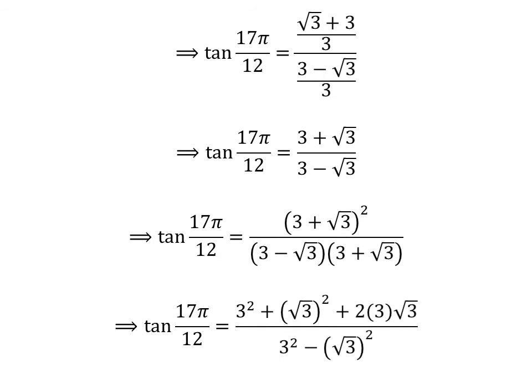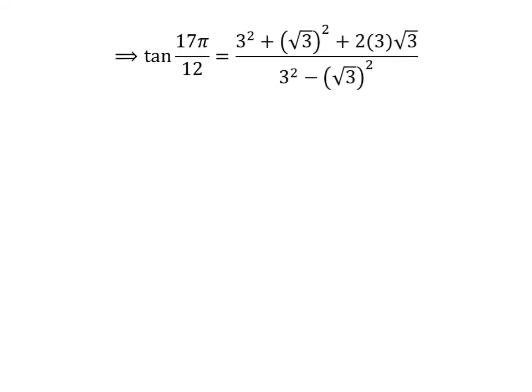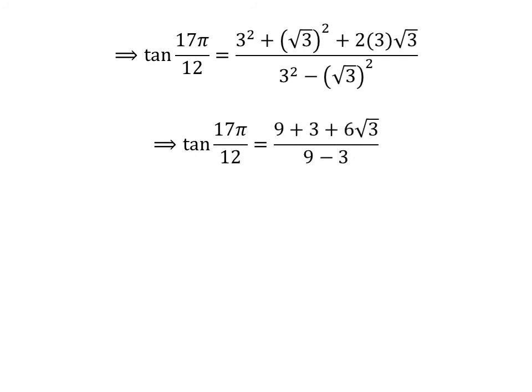Let us expand the square of (3 plus square root of 3). In the numerator we have: square of 3 plus square of square root of 3 plus 2 times 3 times square root of 3. In the denominator, (3 minus √3)(3 plus √3) is square of 3 minus square of square root of 3. Square of 3 is 9, square of square root of 3 is 3. So tangent of 17π/12 is equal to (9 + 3 + 6√3) upon (9 minus 3).